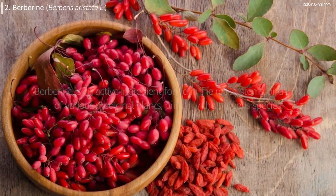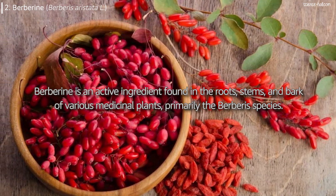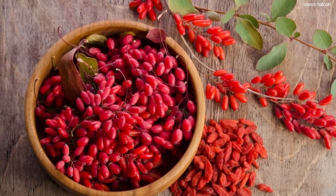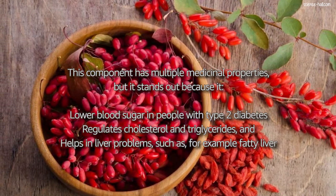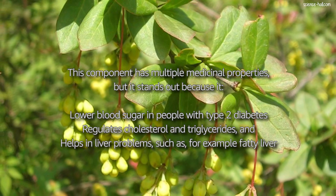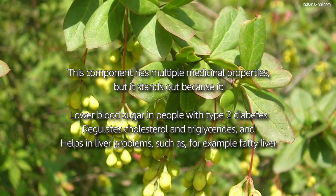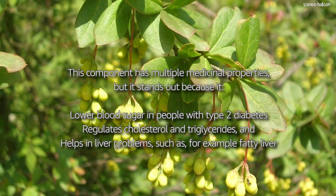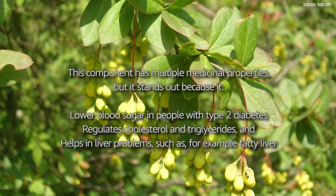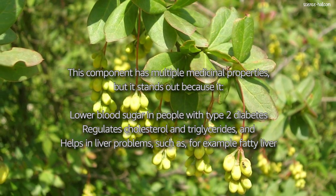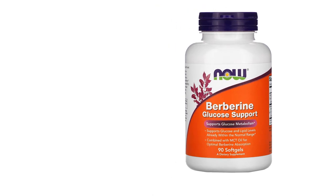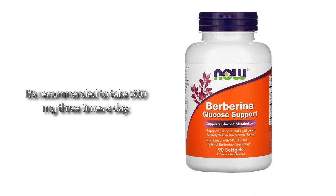Second, berberine: an active ingredient found in the roots, stems and bark of various medicinal plants, primarily the berberine species. This component has multiple medicinal properties, but it stands out because it lowers blood sugar in people with type 2 diabetes, regulates cholesterol and triglycerides, and helps in liver problems such as fatty liver. The most common commercial presentation is in capsules and it's recommended to take 500mg 3 times a day.